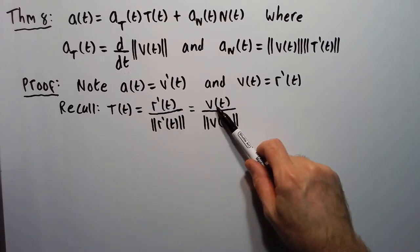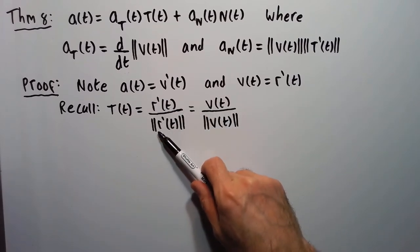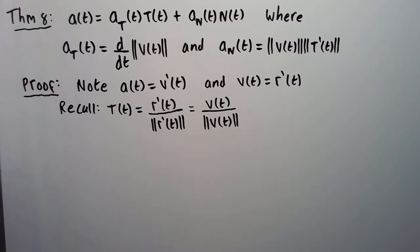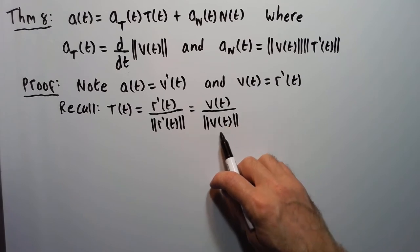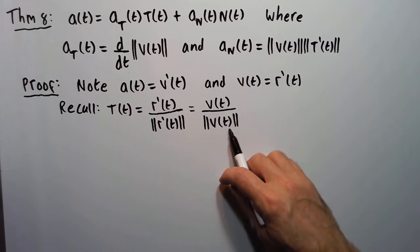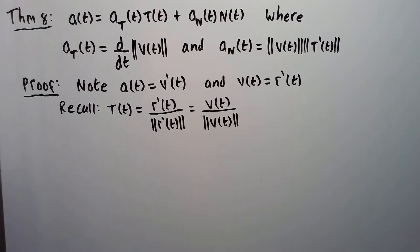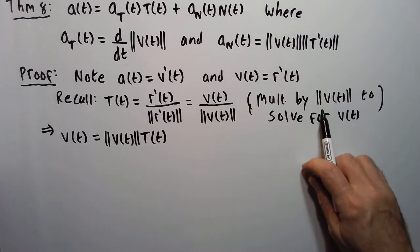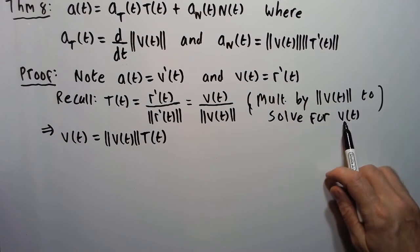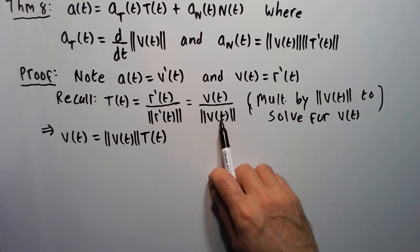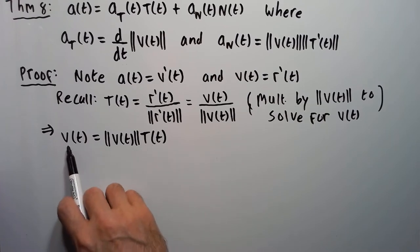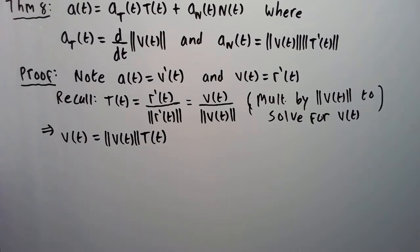We replace r prime with velocity and the magnitude of r prime with the magnitude of velocity, which is speed. From here, we can solve for the velocity by multiplying both sides by speed, giving us: speed times T equals velocity.